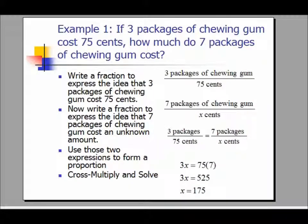Example 1: If three packages of chewing gum cost 75 cents, how much do seven packages of chewing gum cost? First, write a fraction to express the idea that three packages of chewing gum cost 75 cents. The fraction is three packages of chewing gum over 75 cents. Now write a fraction for seven packages over an unknown amount x cents, and set these two fractions equal to each other to form a proportion.